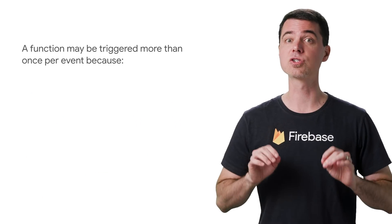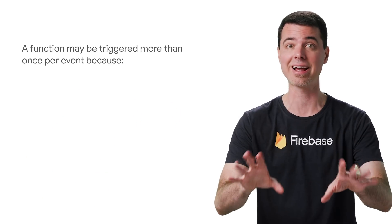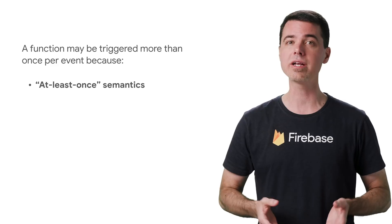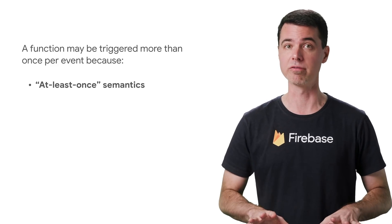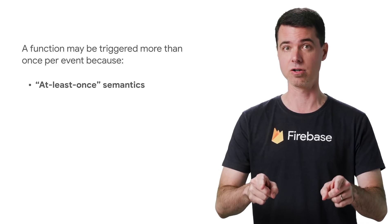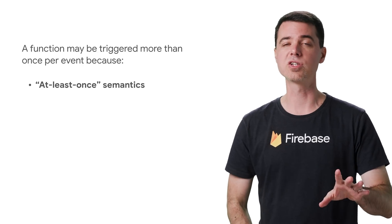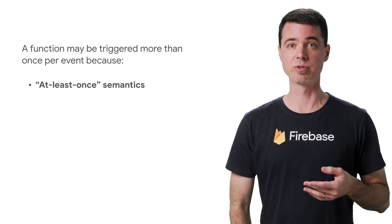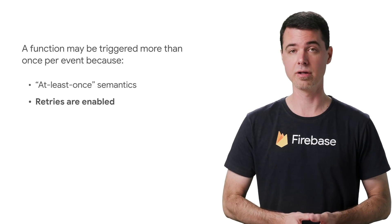Cloud Functions strives to deliver events exactly once. But your code will need to be prepared for the rare possibility of multiple deliveries in order to be 100% correct. There's another situation where an event might get delivered multiple times, and that's when you enable retries on your function.